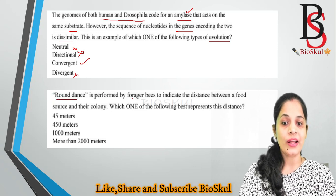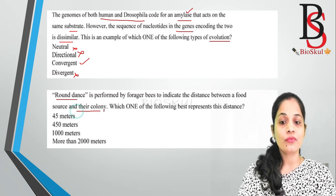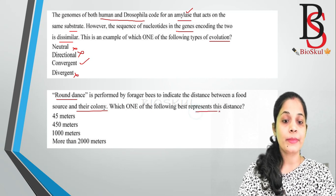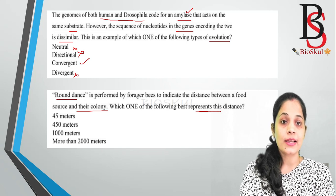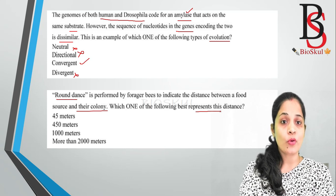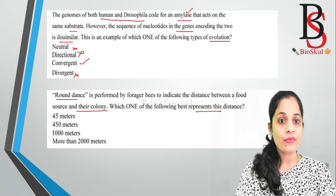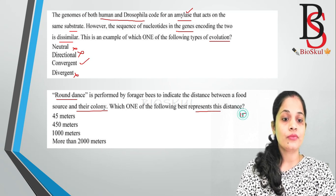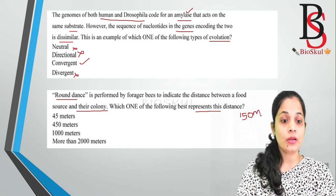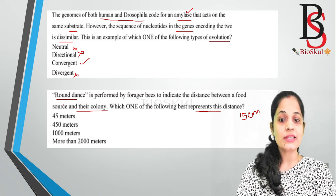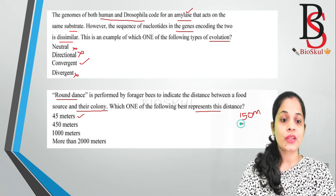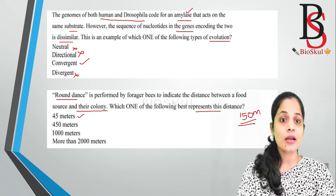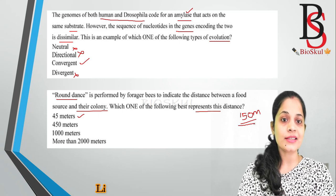Question eight: round dance is performed by forager bees to indicate the distance between a food source and their colony. Which one of the following best represents this distance? Bees perform two types of dance: the round dance and the waggle dance. Round dance is performed when the food source is near to their hive. Waggle dance is performed when the food source is far away — at a minimum distance of 150 meters from the hive. Since the question asks about round dance, the correct answer is 45 meters.